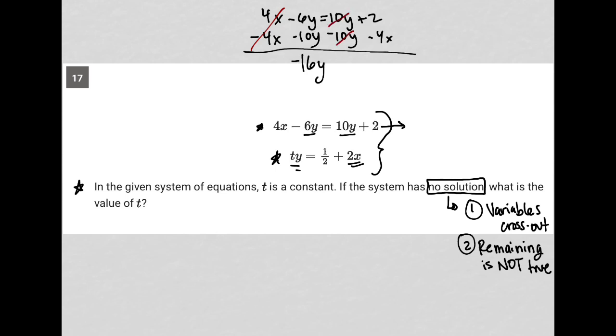The y's cross out. And then I'm going to have my equals, sorry, this should be an equal sign there, equals 2 minus 4x. And I'll just leave it like that. Okay, so my first equation is now negative 16y equals 2 minus 4x. My bottom equation is ty equals 1 half plus 2x. Now here's where the understanding of no solution comes into play.